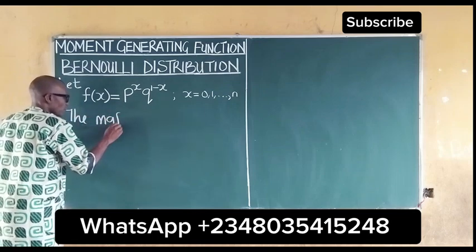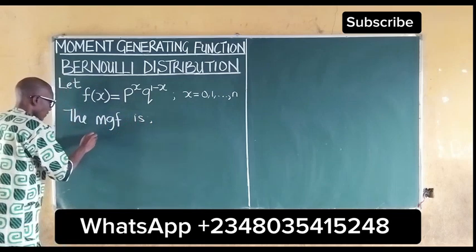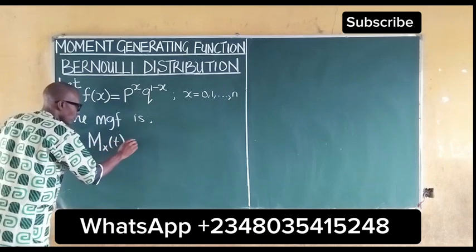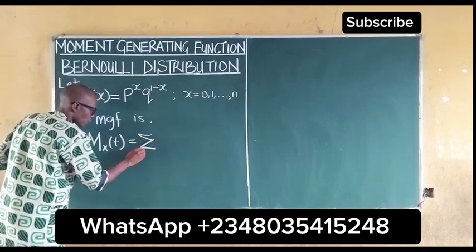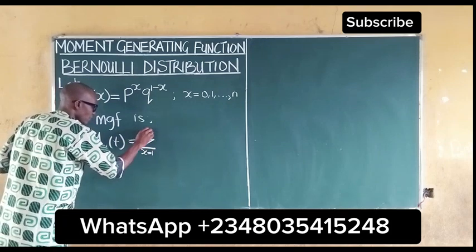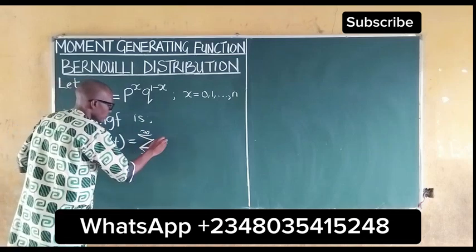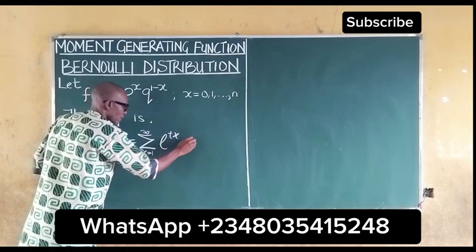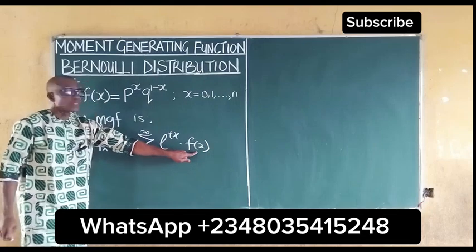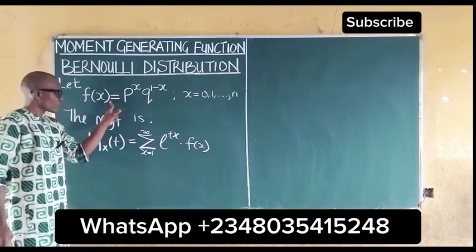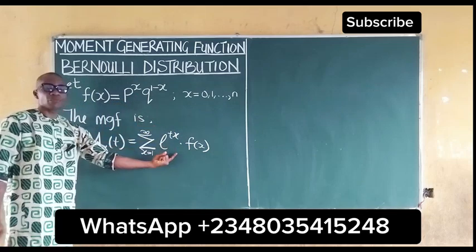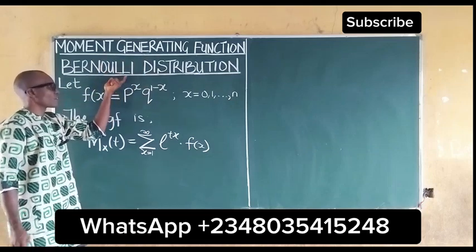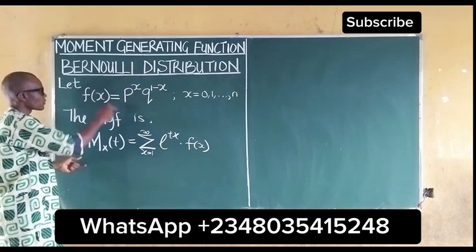The moment generating function is given as M(t) equal to the summation over x, from 1 to infinity, of e^(tx) multiplied by f(x), where f(x) is the PDF. All we need to do is substitute the PDF into the moment generating function to get the MGF for the Bernoulli distribution.